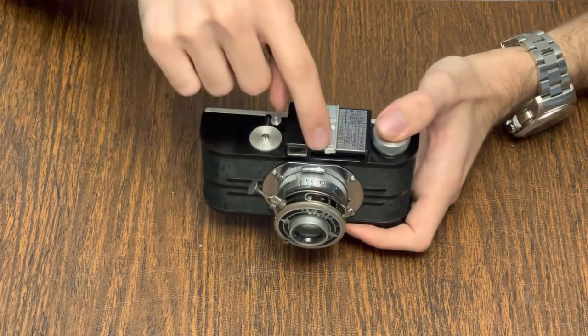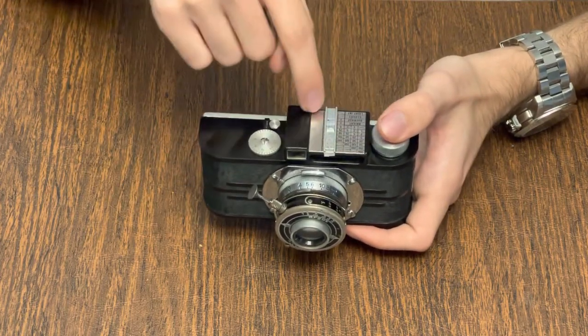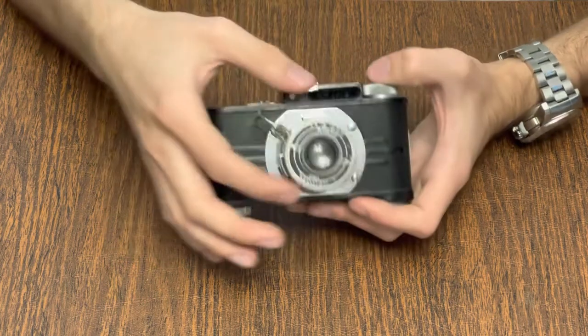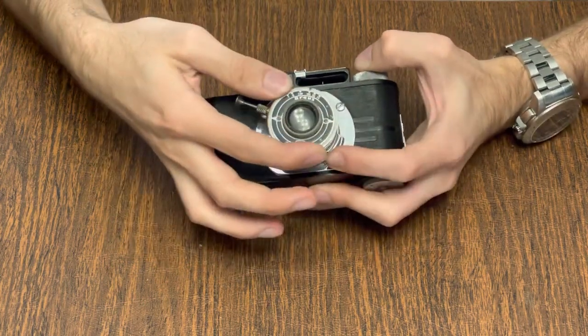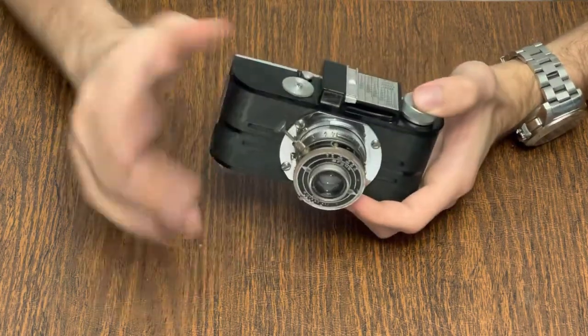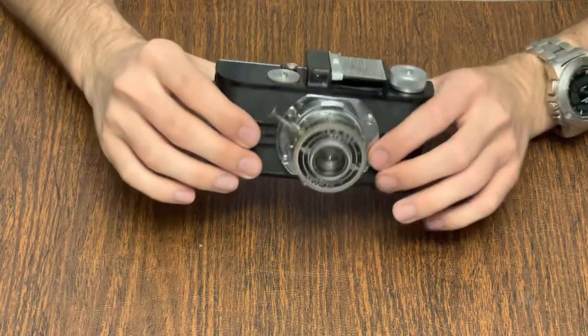Once that's done the calculator on the top of the unit can be used to determine what setting of shutter speed and aperture can be used to take a properly exposed photo for the subject you pointed it at.